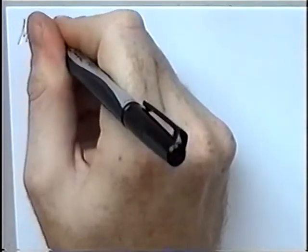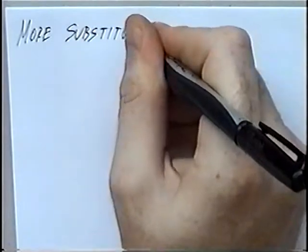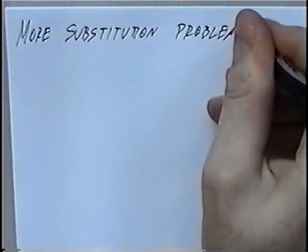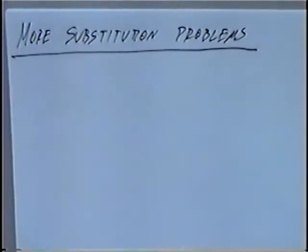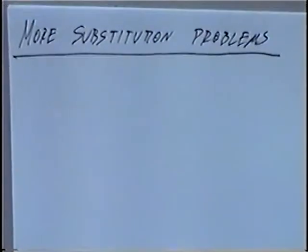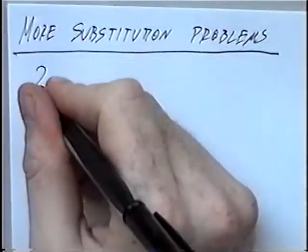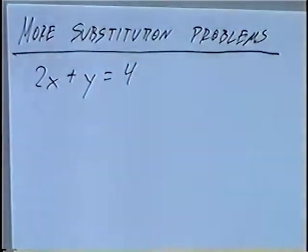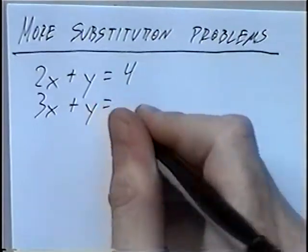The title of the last section today is More Substitution Problems. We need to solve using substitution. First equation is 2x plus y equals 4. Second equation is 3x plus y equals 8.